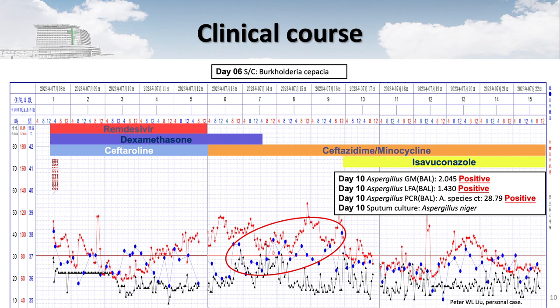Here is the final result. We did a culture and the culture grew Burkholderia cepacia. We truly escalated, shifting antibiotics to agents targeting Burkholderia. We also repeated the Aspergillus study and had a rapid Aspergillus lateral-flow test with a positive result. We started antifungal therapy with isavuconazole before we got the result, because the CT scan pattern was atypical for bacterial infection — it was peripherally located. All results were ultimately positive for Aspergillus: positive galactomannan test, positive PCR, and eventually culture grew Aspergillus niger.